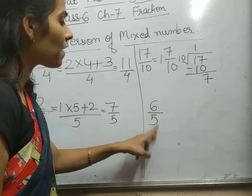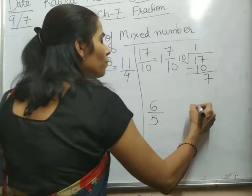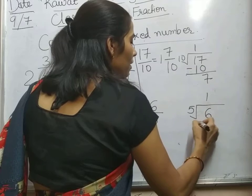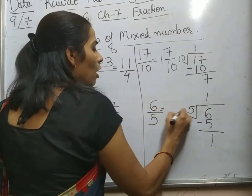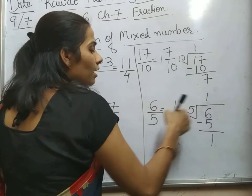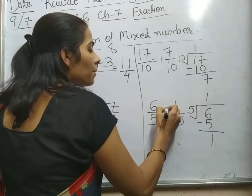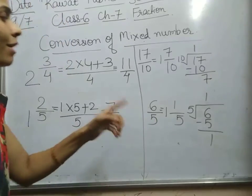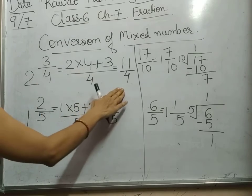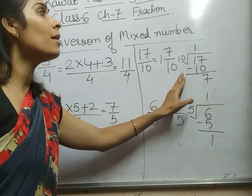There is another question: six by five. We have to convert this improper fraction into a mixed fraction. So, we will divide six by five. Five ones are five, remainder is one. The remainder goes to the top, the denominator remains the same — five — and the quotient comes in the whole part. So, it is one and one by five. In this way, we can convert the mixed number into an improper fraction, and if we are given an improper fraction, we can convert it into a mixed number.